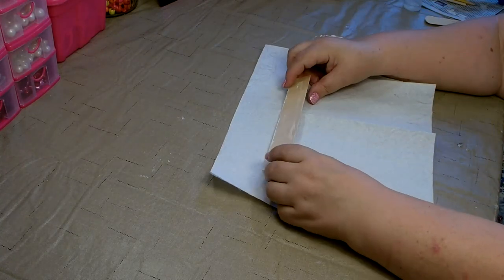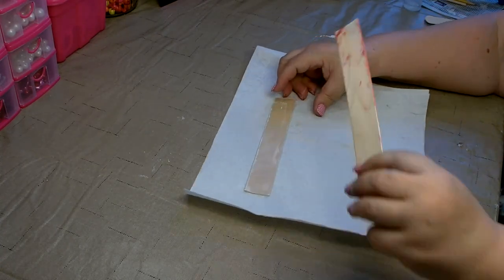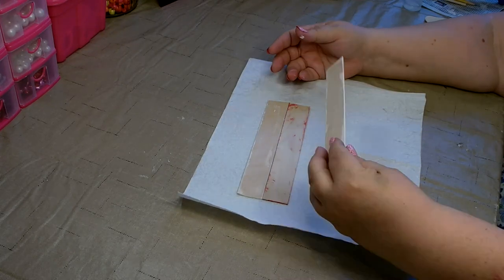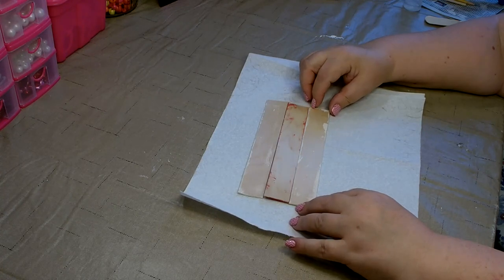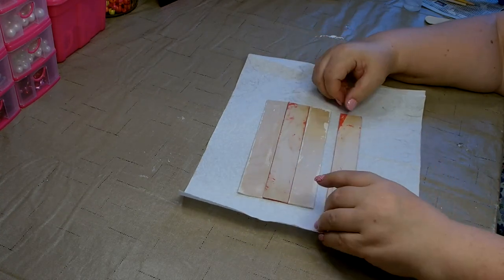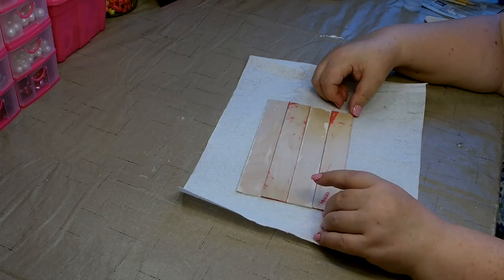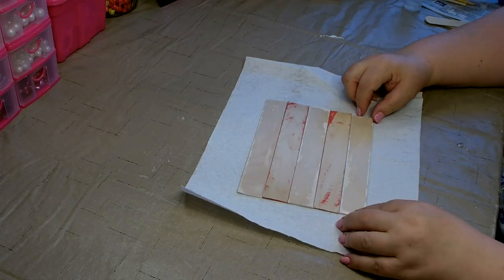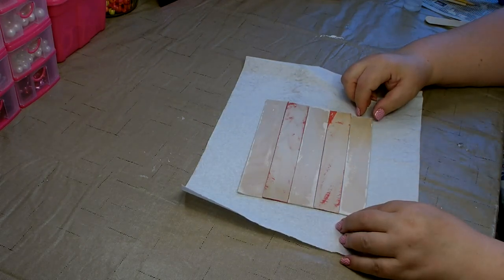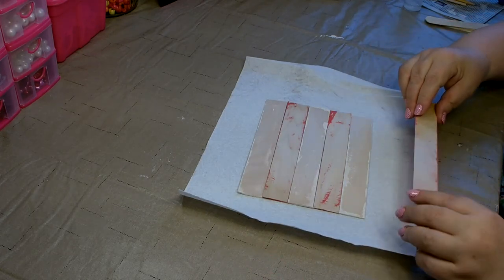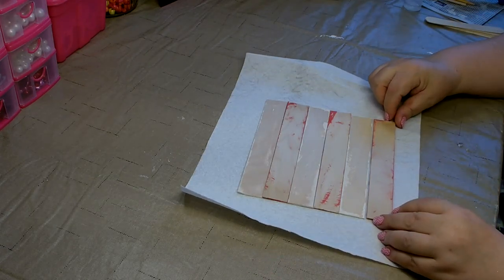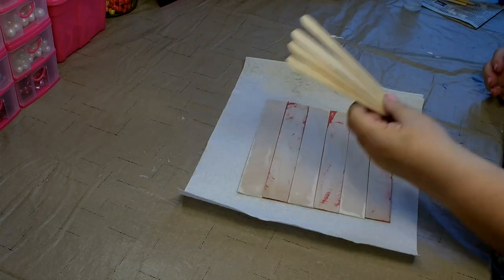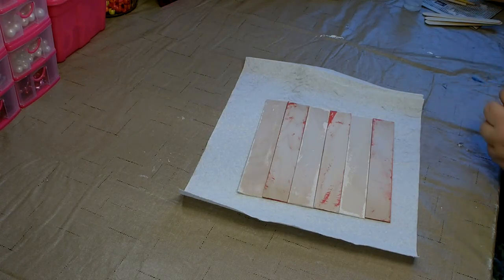You'll want to start laying the craft sticks face down and alternating between red and white. We'll be attaching these together by using some of the large craft sticks that you get from the Dollar Tree and hot glue.